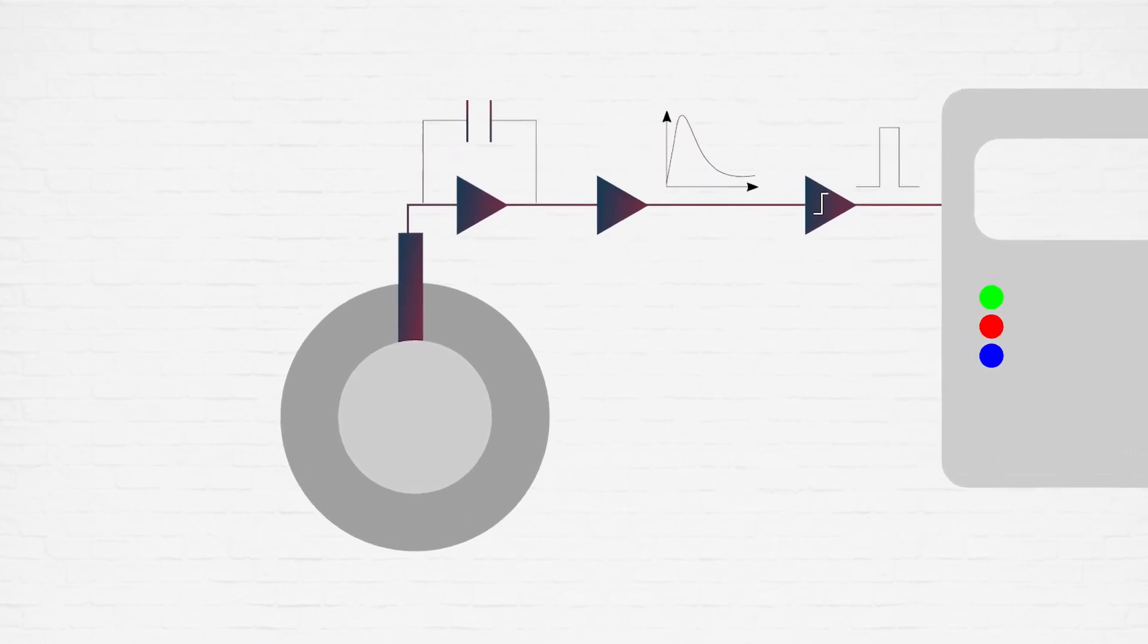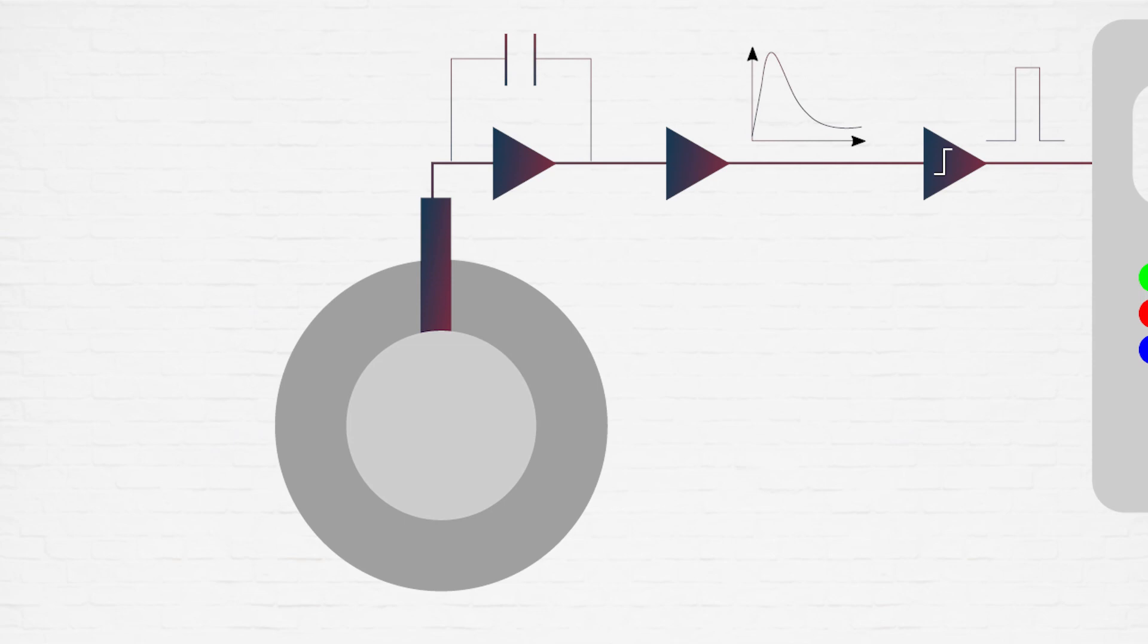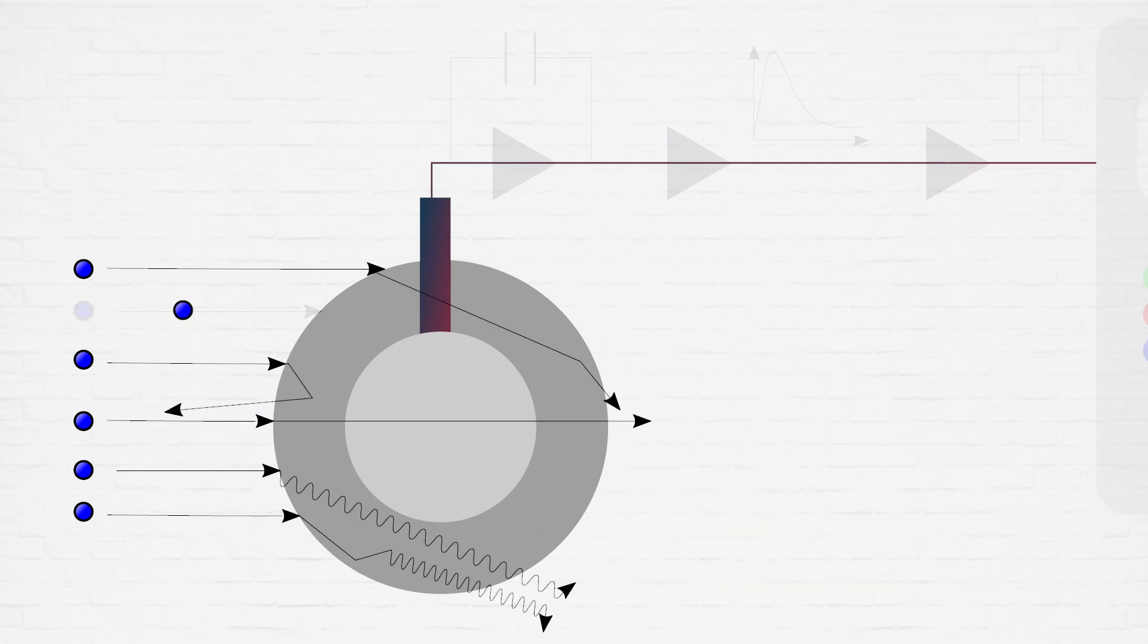However, one of those is based on the use of the thermal neutron counters that we just mentioned. This method exploits the moderation of fast or epithermal neutrons in low atomic number materials such as plastics. Therefore, by properly combining layers of plastic and thermal neutron counters, it is possible to perform a detection of the different neutron classes.